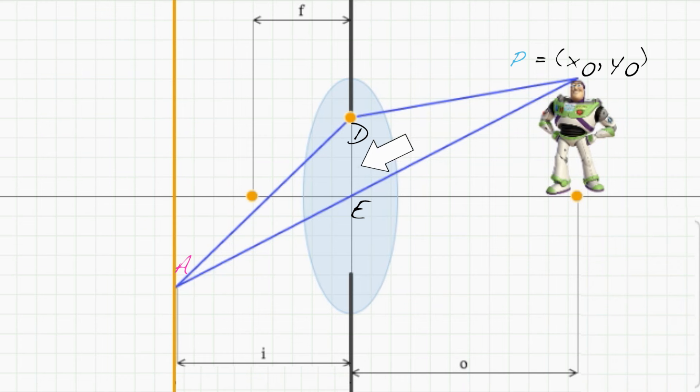So all light rays from P which pass through DE end up focusing at the same point A. And if the image plane is at this distance, I, then P will be in sharp focus.